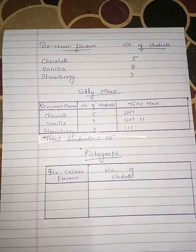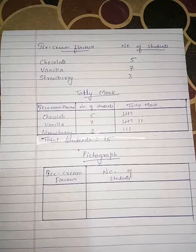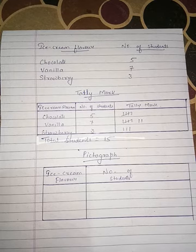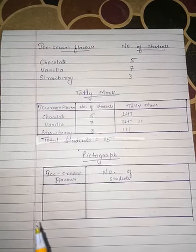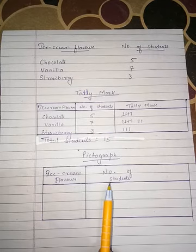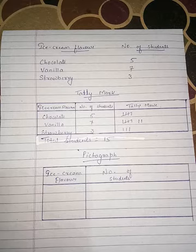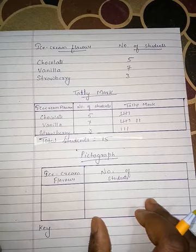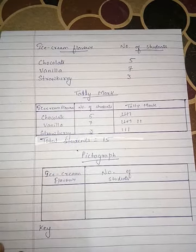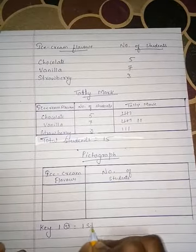Now we need to represent this same data as a pictograph. When making a tally mark table, 3 columns are used. For a pictograph, only 2 columns are needed — one for the item being represented and one for the pictures. In the pictograph, we must specify the key: what each picture represents. Since our numbers are small — chocolate 5, vanilla 7, strawberry 3 — we use 1 smiley equals 1 student.